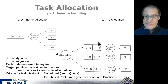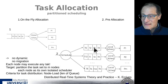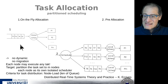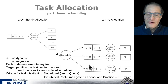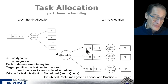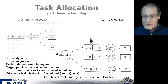In pre-allocation, the distribution is fixed - tasks stay in their assigned node until completion; there is no dynamic migration. Each computer must be able to execute any task. The goal is to partition M tasks into N nodes, where each node has a separate isolated local scheduler. To decide how to distribute tasks, we use the load of each node: the number of ready tasks, how heavy each task is, or how far away the deadlines are in the future.